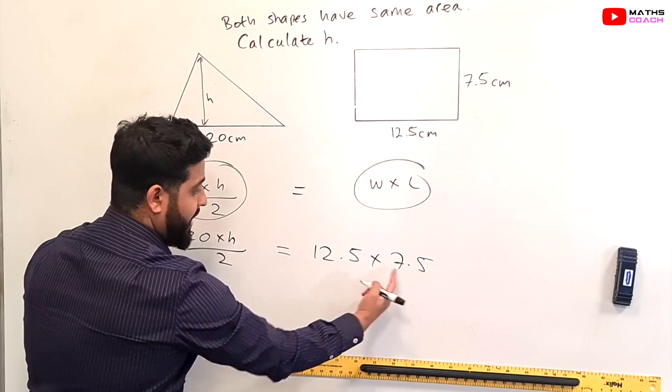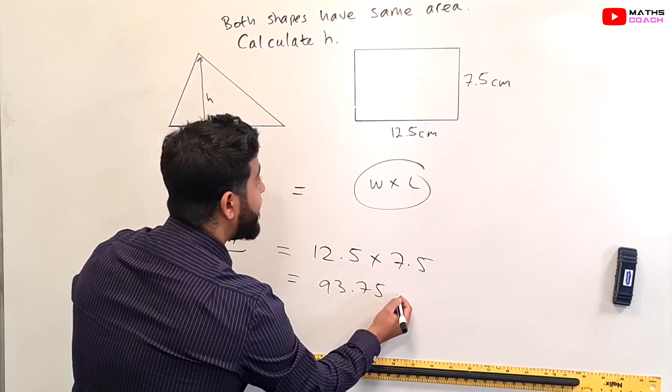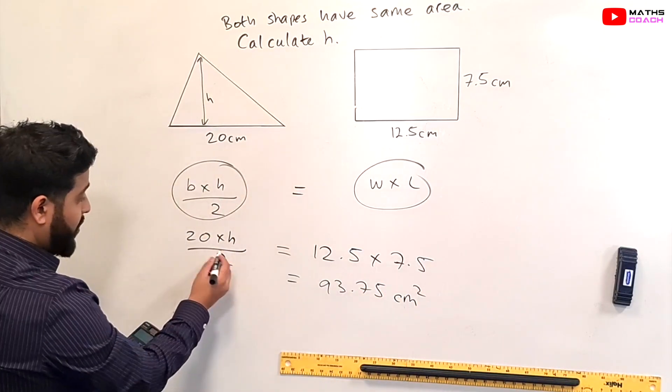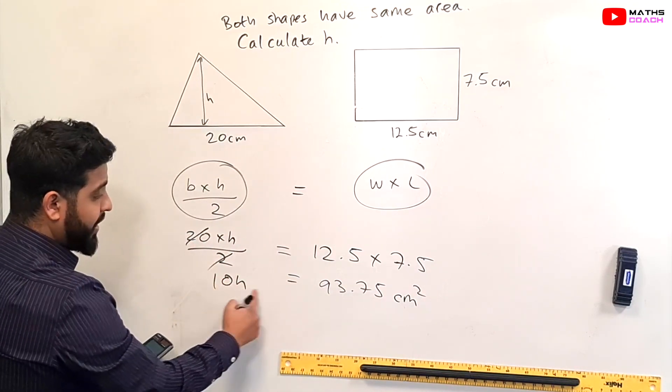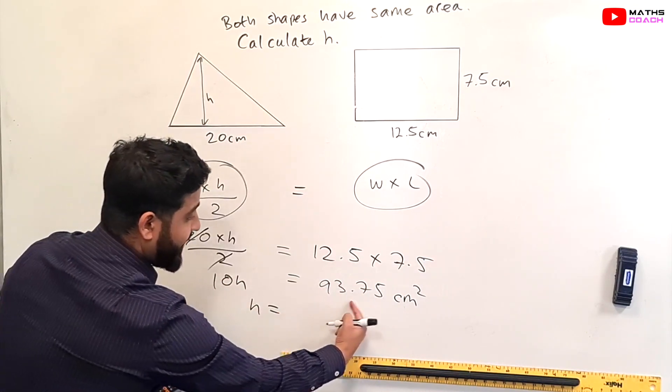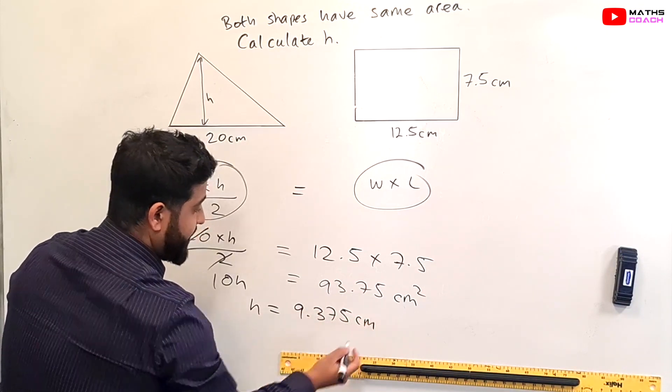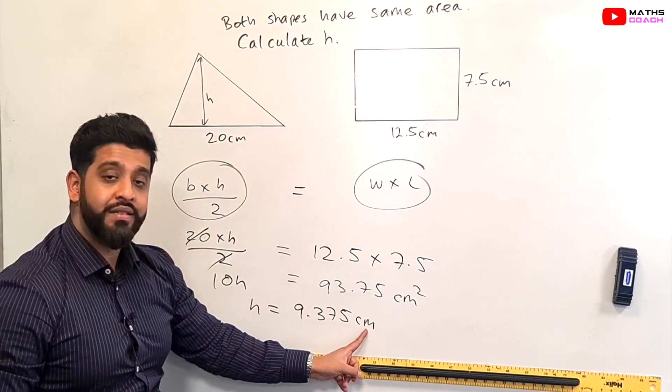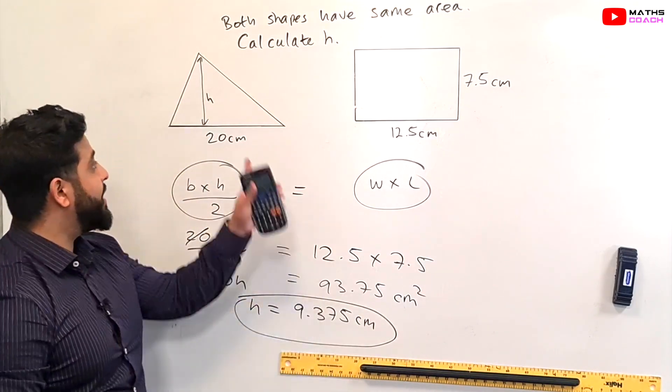If we get our calculators we can calculate this and this gives us 93.75 and the units is centimeter squared and over here we have what we can do we can simplify this so we can cancel this so we get 10h is equal to that and therefore h would be equal to we divide both sides by 10 so divide this by 10 and that would be 9.375 centimeters. Now because it's h is a height the height of this is going to be just centimeters so 9.375 centimeters is the height of this.